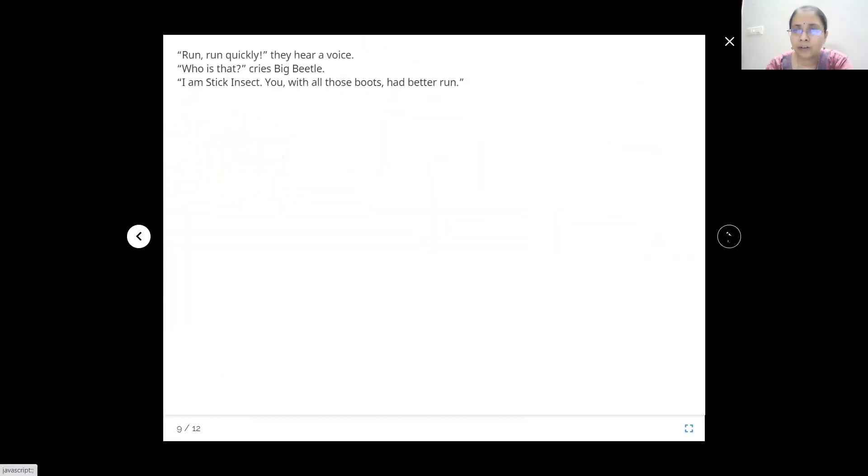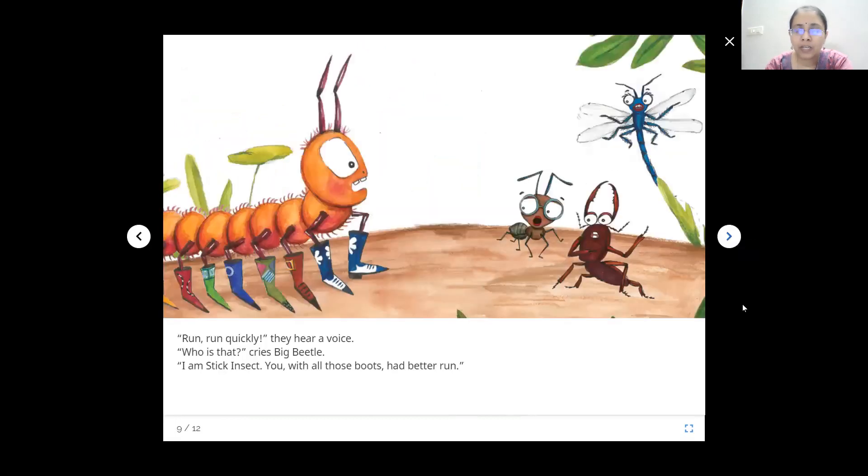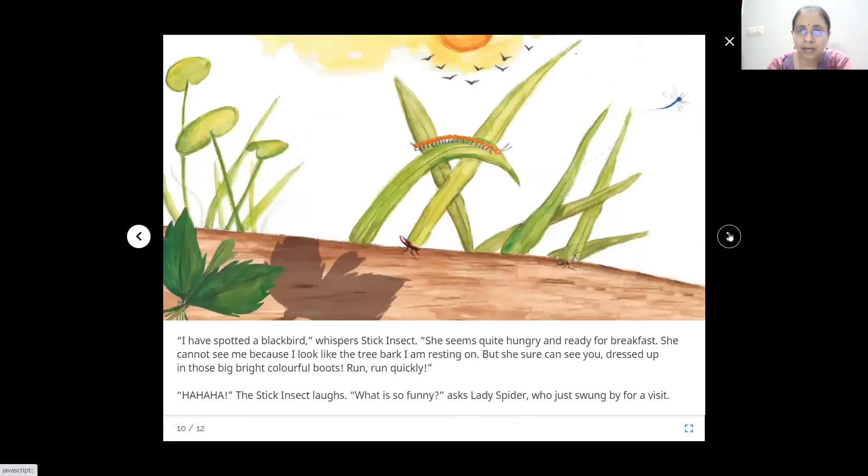He's totally really confused right now. But then what he hears? Run, run quickly. They hear a voice. Who is that? Cries Big Beetle. I am Stick Insect. You with all those boots had better run. I have spotted a black bird, whispers Stick Insect. She seems quite hungry and ready for breakfast. She cannot see me because I look like the tree bark I am resting on. But she sure can see you.